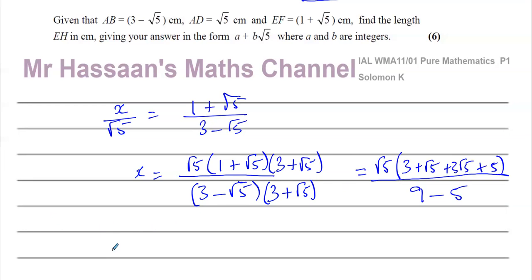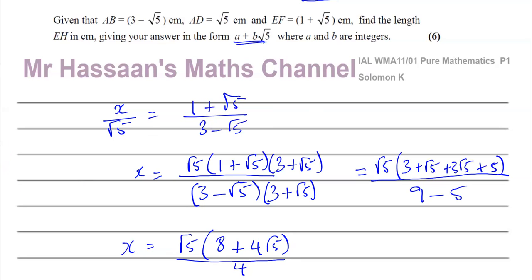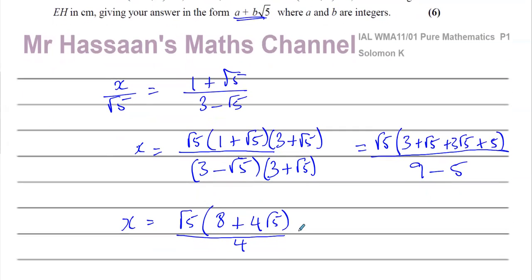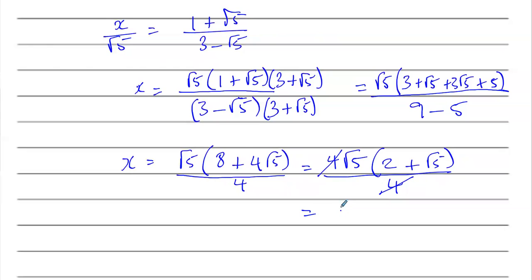So x equals √5 times (3 + 5 + √5 + 3√5) over (9 − 5). Collecting like terms: √5 + 3√5 is 4√5, and 3 + 5 is 8. So we have √5 times (8 + 4√5) over 4. There's a common factor of 4, so taking that out gives 4 times √5 times (2 + √5) over 4. The fours cancel, leaving √5 times (2 + √5), which is 2√5 + √5 × √5 = 2√5 + 5.